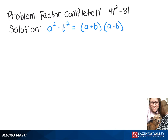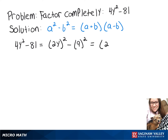So with that in mind, we can rewrite 4y squared minus 81 as 2y quantity squared minus 9 squared, and then rewrite that as being equal to 2y plus 9 times 2y minus 9.